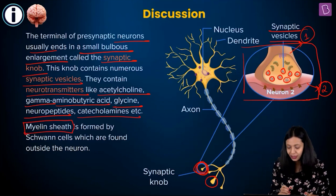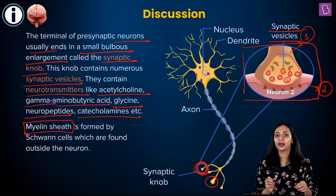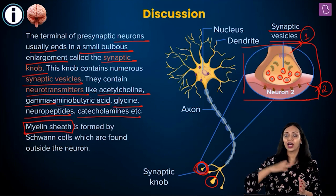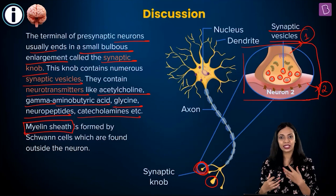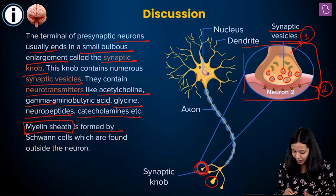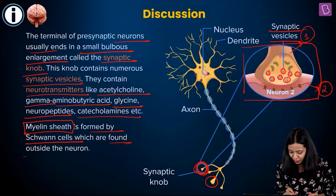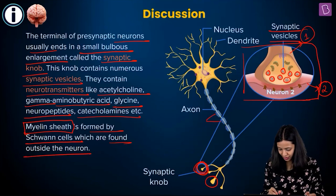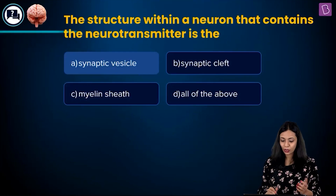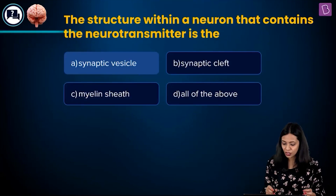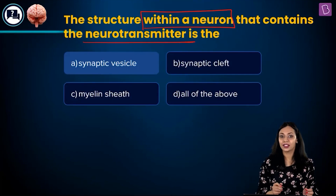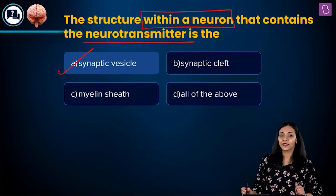The myelin sheath, made up of Schwann cells found outside the neuron, does not contain neurotransmitters. Since the question asks for the structure within a neuron that contains neurotransmitters, the correct answer is option A: synaptic vesicle.